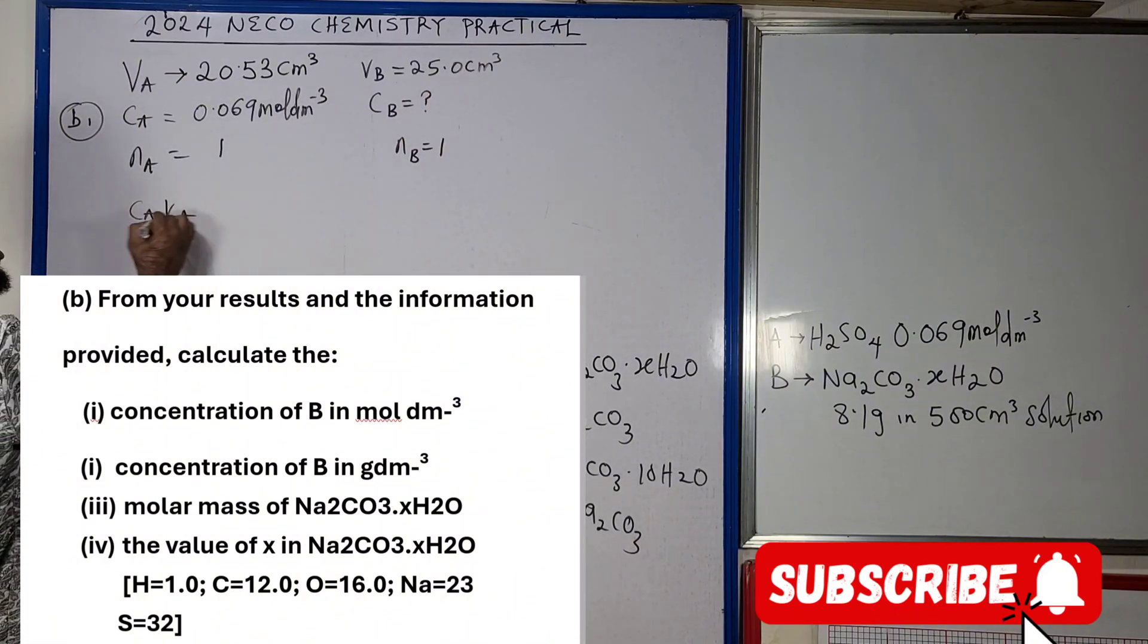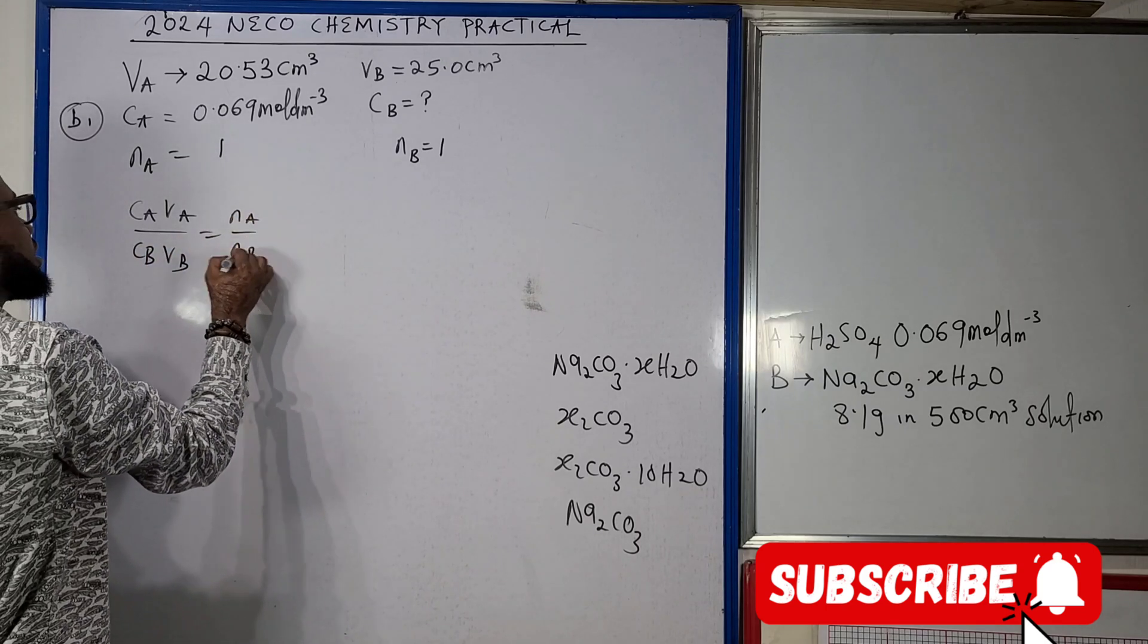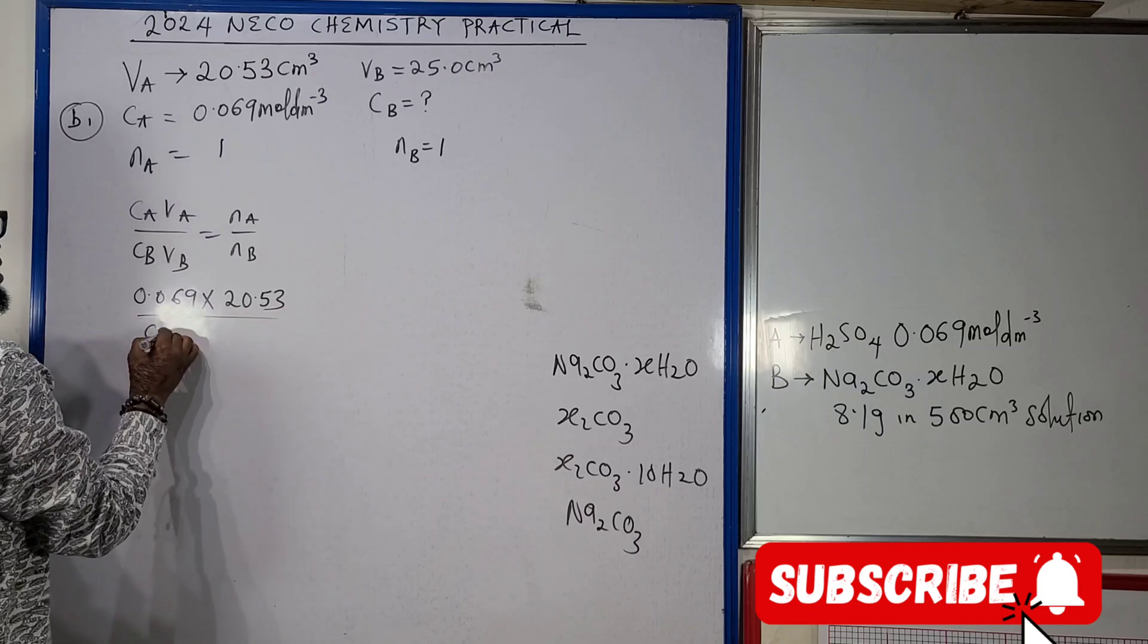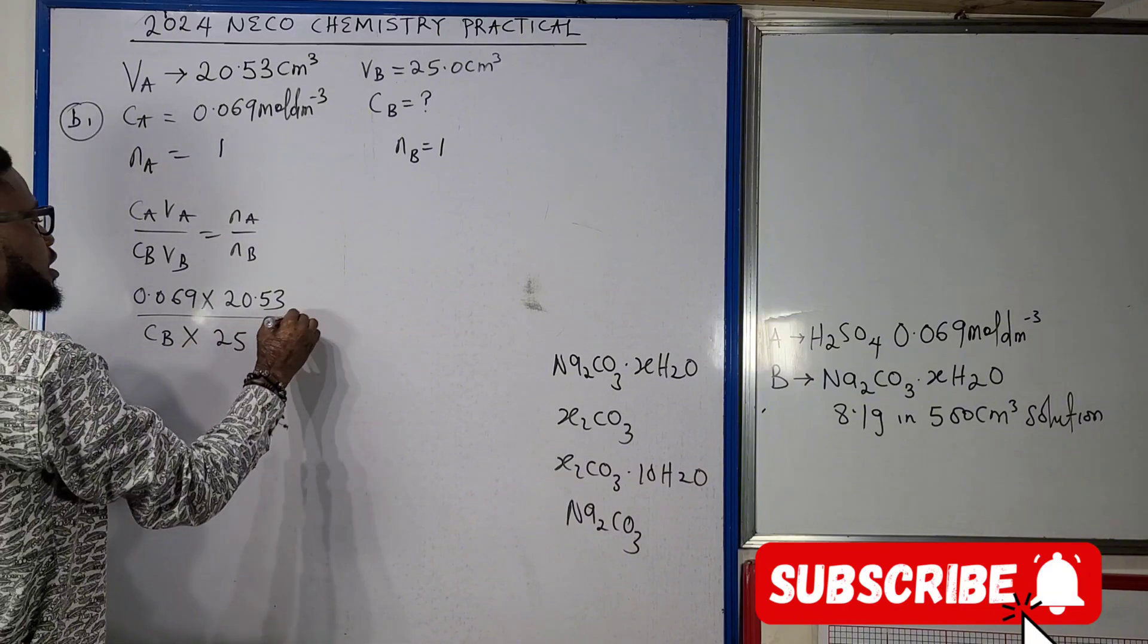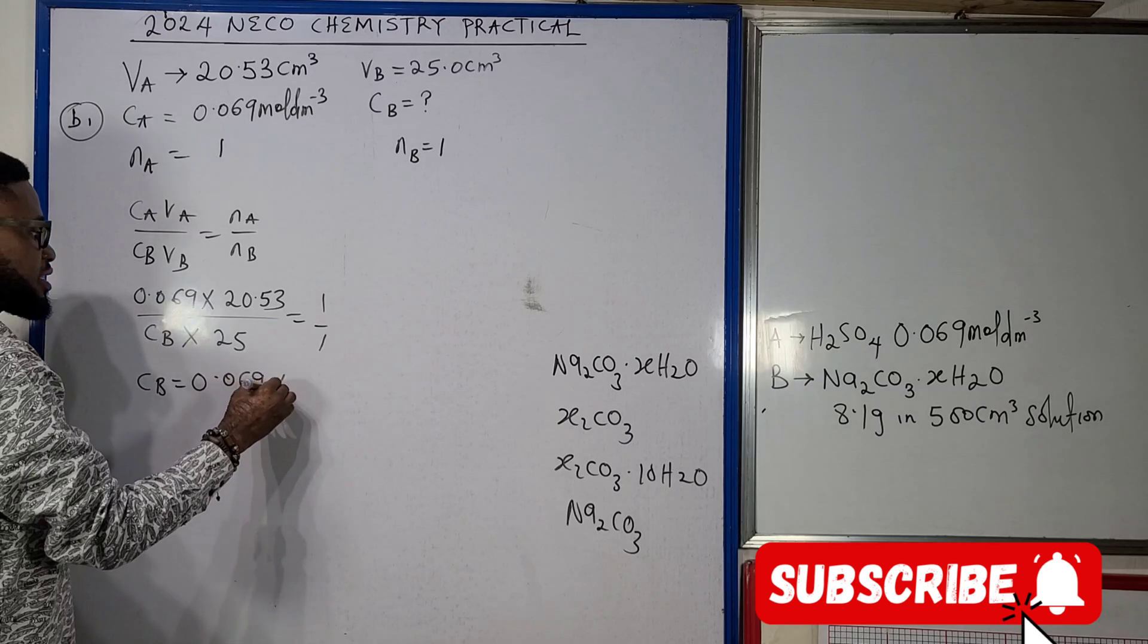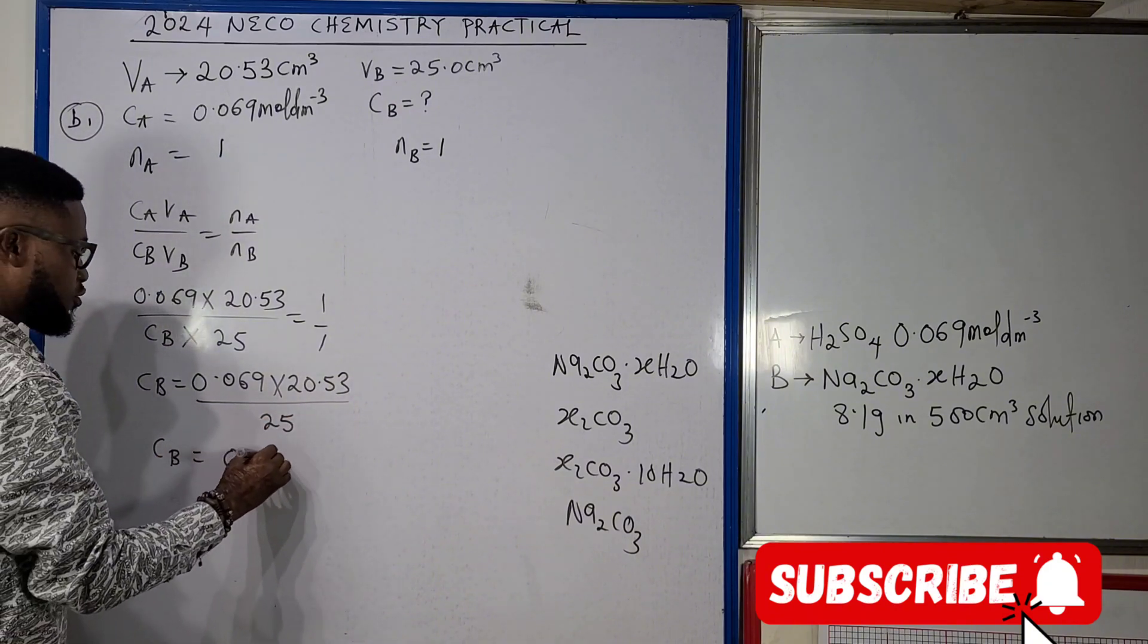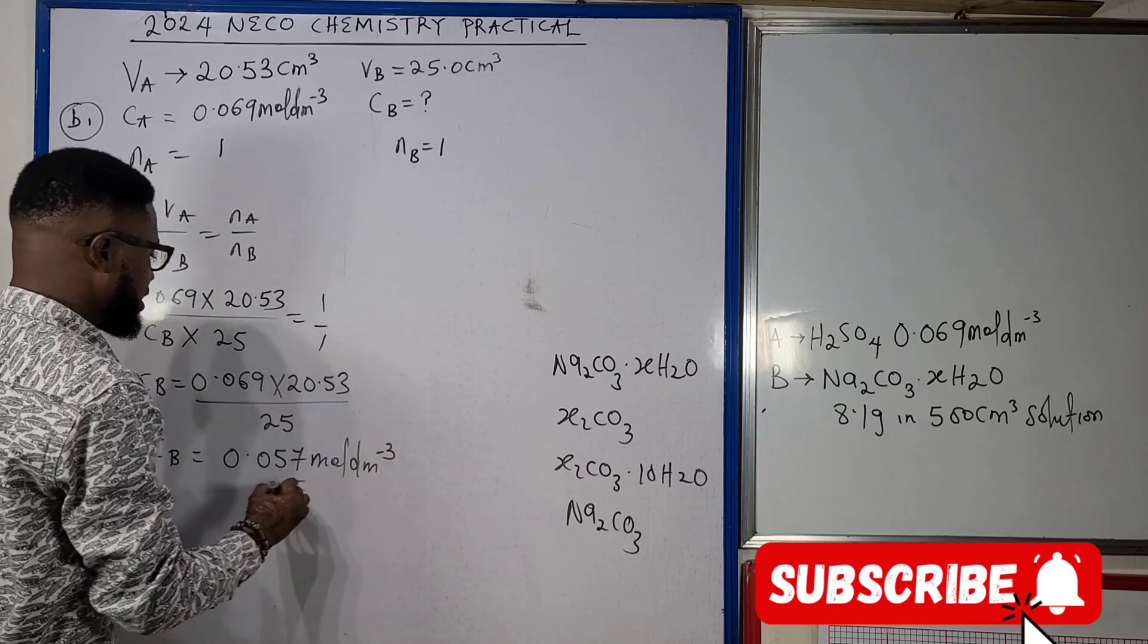If I use CA times VA over CB times VB equals to NA over NB, CA here is 0.069 times VA is 20.53 divided by CB, that is our unknown for this question, times VB that's 25, it goes to one over one. CB is going to be 0.069 times 20.53 divided by 25. If you compute the answer here, our CB is going to be 0.057 mole per dm cube.